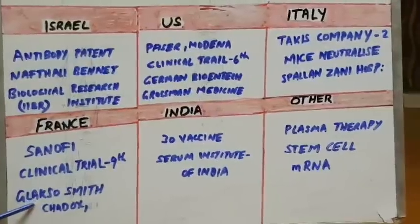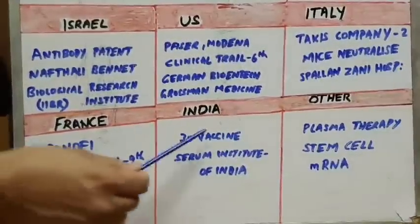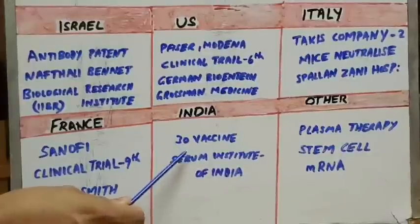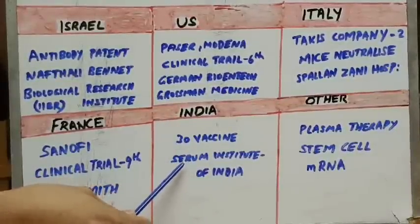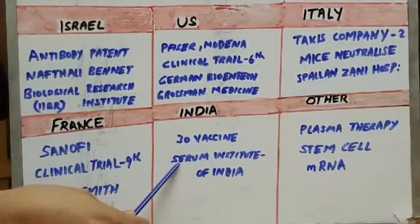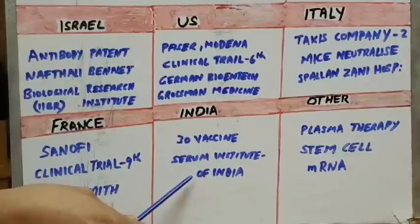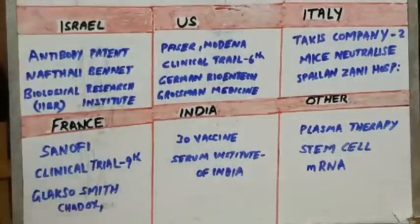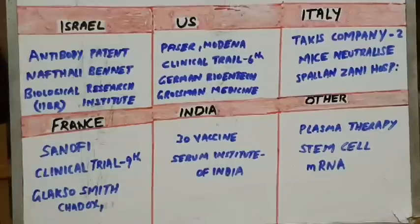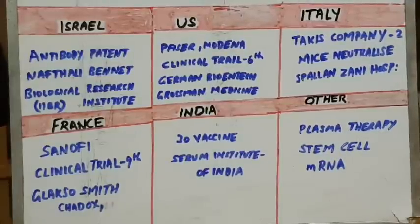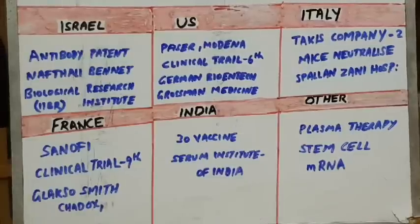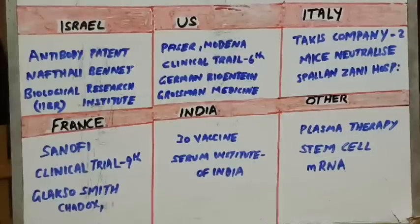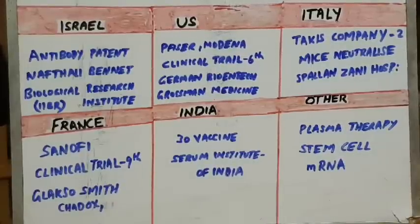In the UK, Oxford University is leading. In India, we have tried a third vaccine approach. We have a company called the Serum Institute of India. You could also try to get a vaccine distributed all over the world. In India, we have a lot of research and a lot of vaccine manufacturing capacity.